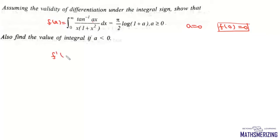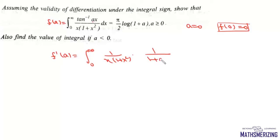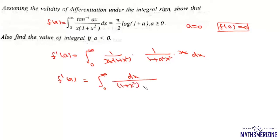Now we differentiate this function. We find f'(a), which equals the integral from 0 to ∞. By Leibnitz's rule, we differentiate the integrand partially with respect to a. We can write tan⁻¹(ax) as 1/(x) · tan⁻¹(ax), and when we differentiate we get 1/(1 + a²x²) · x. The x's cancel, giving us f'(a) = integral from 0 to ∞ of 1/(1 + a²x²) dx.